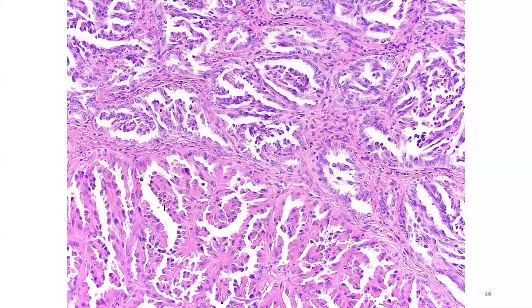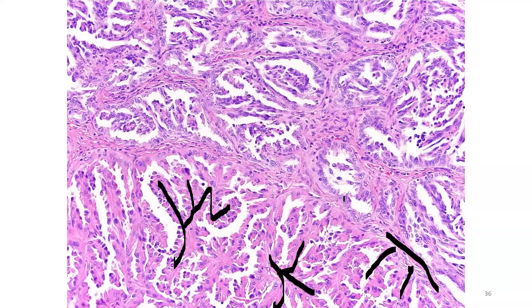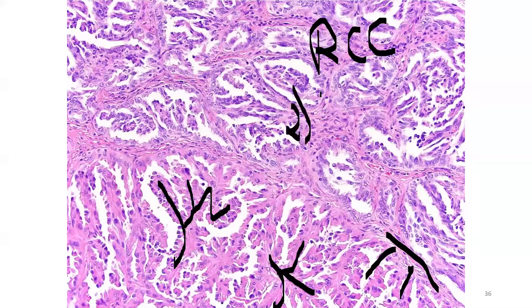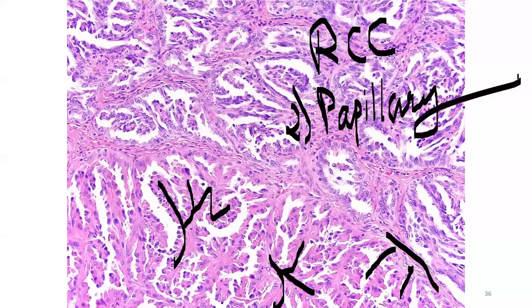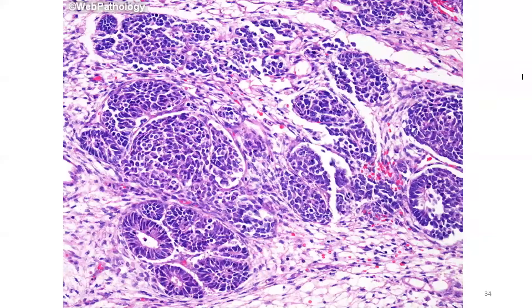This is another slide of renal cell carcinoma showing papillary formation — finger-like projections are visible. This is the papillary type of RCC, renal cell carcinoma.